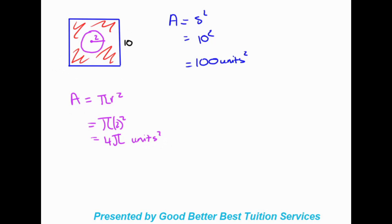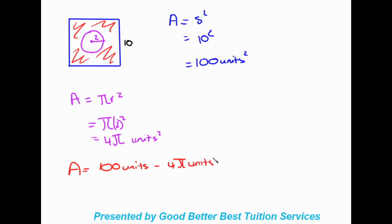Now we work out the shaded area by minusing: 100 units squared minus 4 pi units squared. That is our final answer, because with circles we have to answer in terms of pi. We can't simplify further since there's no defined numeric value to assign to 4 pi units squared — so the answer remains 100 minus 4 pi units squared.